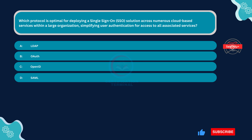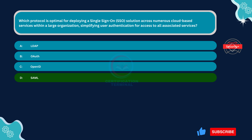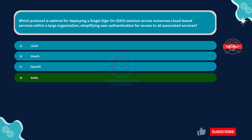The correct answer is Option D, Security Assertion Markup Language, SAML. SAML is the optimal protocol for deploying a single sign-on solution across numerous cloud-based services within a large organization. It allows for the exchange of authentication and authorization data between identity providers and service providers, enabling users to authenticate once and access multiple services without re-entering credentials. It's widely adopted for enterprise SSO solutions and offers robust security features.